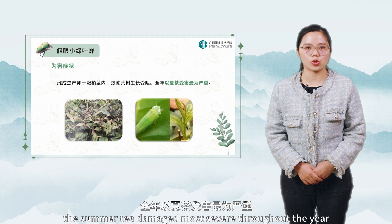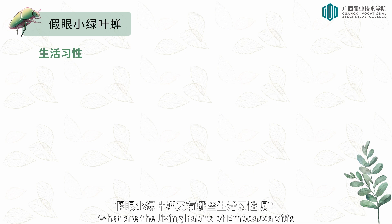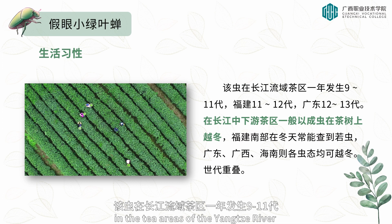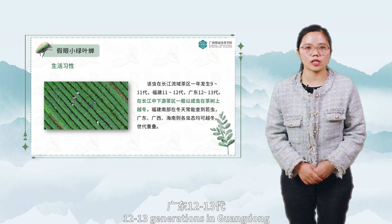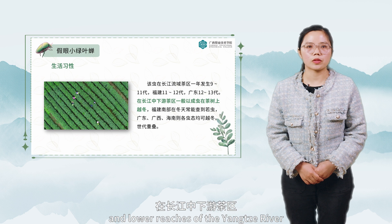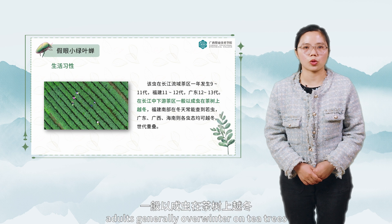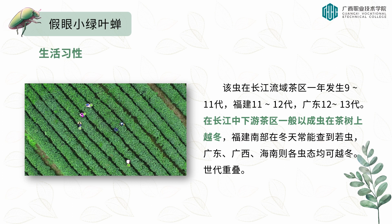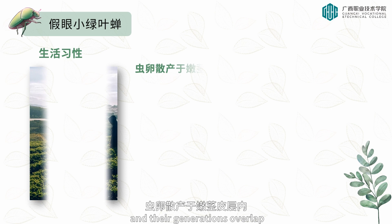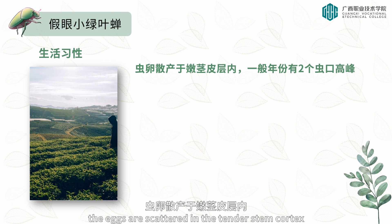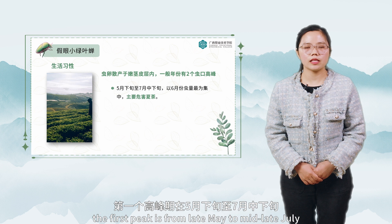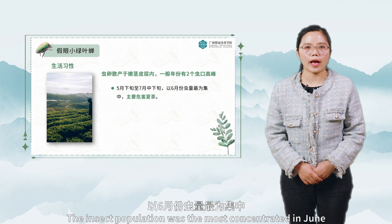What are the living habits of Empoasca vitis? The insect has nine to eleven generations a year in the Yangtze River tea areas, eleven to twelve generations in Fujian, and twelve to thirteen generations in Guangdong. Adults generally overwinter on tea trees in the middle and lower Yangtze River areas, while in southern Fujian, Guangdong, Guangxi, and Hainan they can overwinter with overlapping generations. Eggs are scattered in the tender stem cortex. There are generally two population peaks: the first peak is from late May to mid-to-late July, with the most concentrated population in June, mainly harming summer tea.